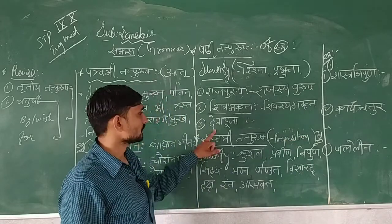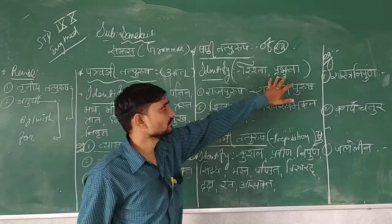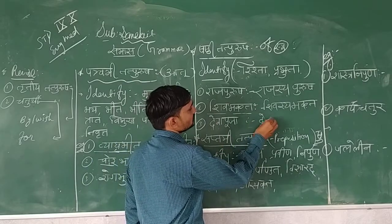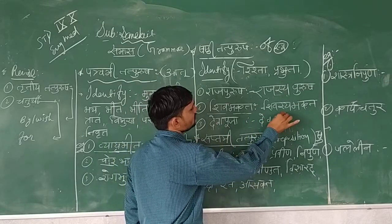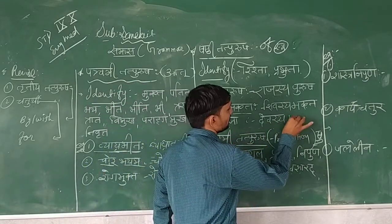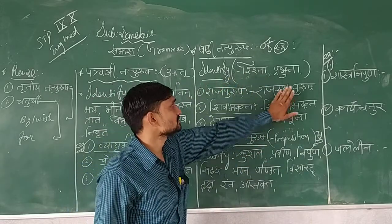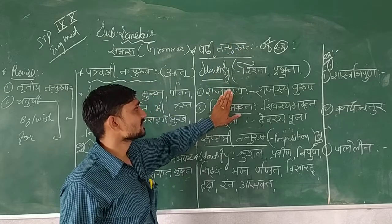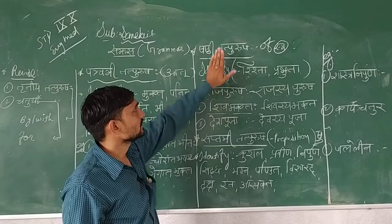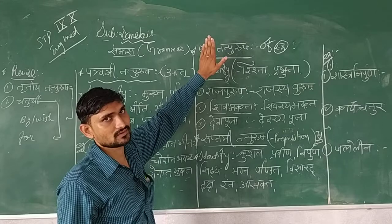For 10th standard students, you only have to pay attention to identify which compound belongs to which Tatpurusha — whether it is Shashthi, Saptami, Tritiya, or whatever. Now let's see Saptami Tatpurusha. In Saptami Tatpurusha, you have to see preposition words and also words like scholarship, skills, and cleverness. These types of identity words include: Praveen, Nipuna, Shiddha, Magna, Pandit, Visharad, Daksha, Rata, Ashakta. If you see these types of words in any compound word, you have to choose Saptami Tatpurusha.